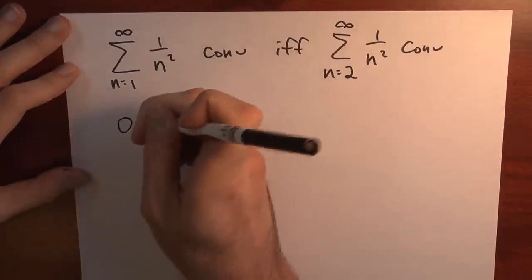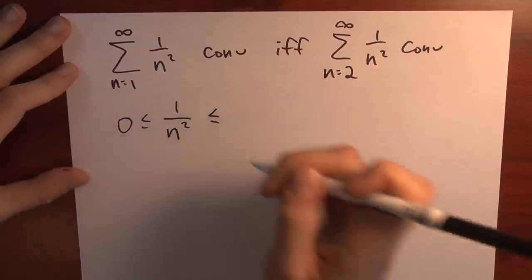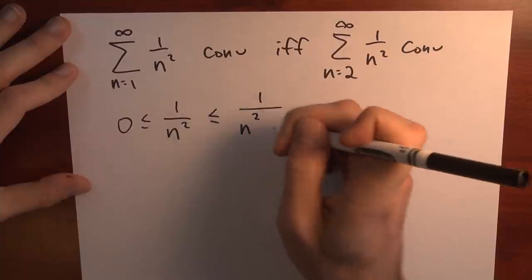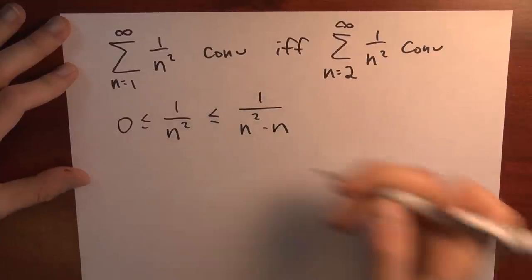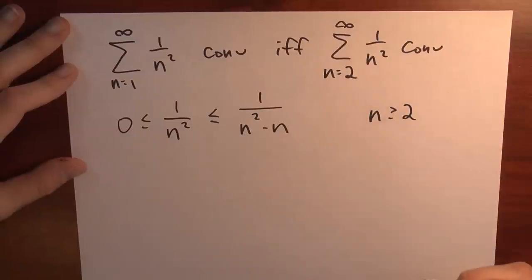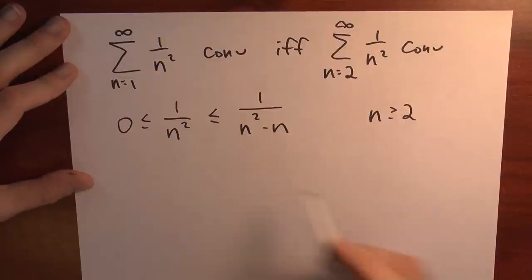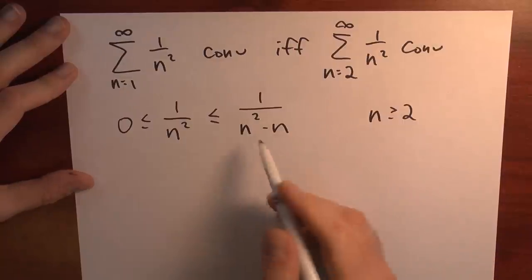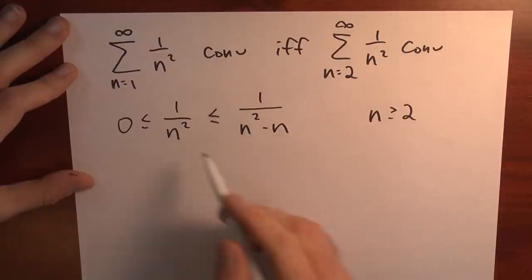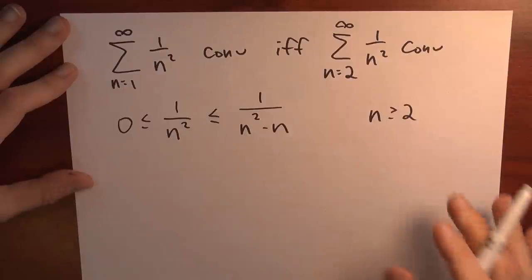We note that 0 is less than or equal to 1 over n squared, which is less than or equal to 1 over n squared minus n, at least as long as n is 2 or more. I don't want to plug in n equals 1 here because I'd be dividing by 0. This inequality holds because the denominator of the right fraction is smaller, so that fraction is bigger.